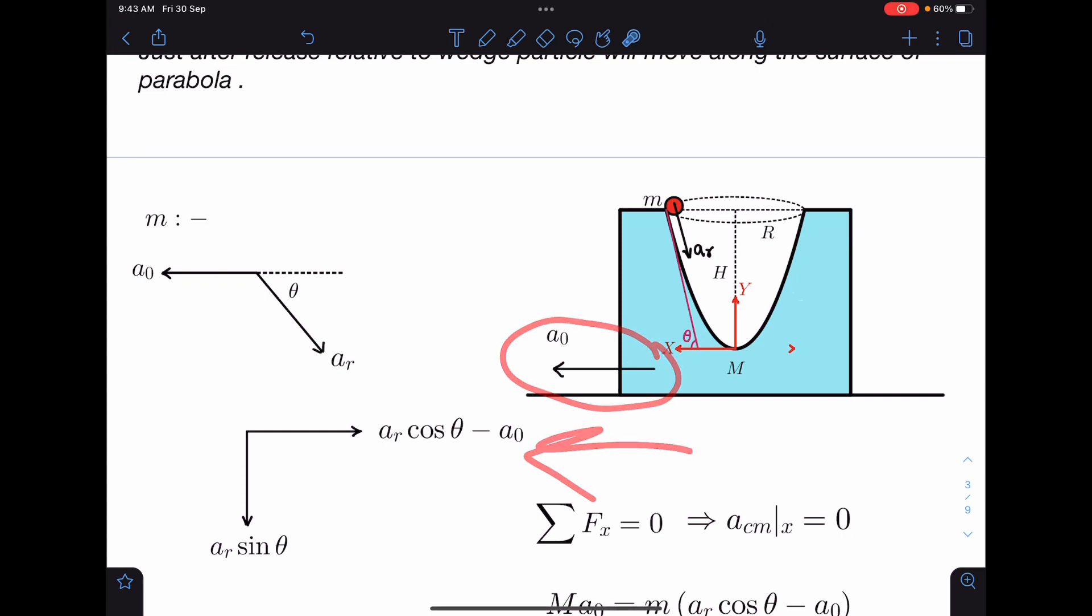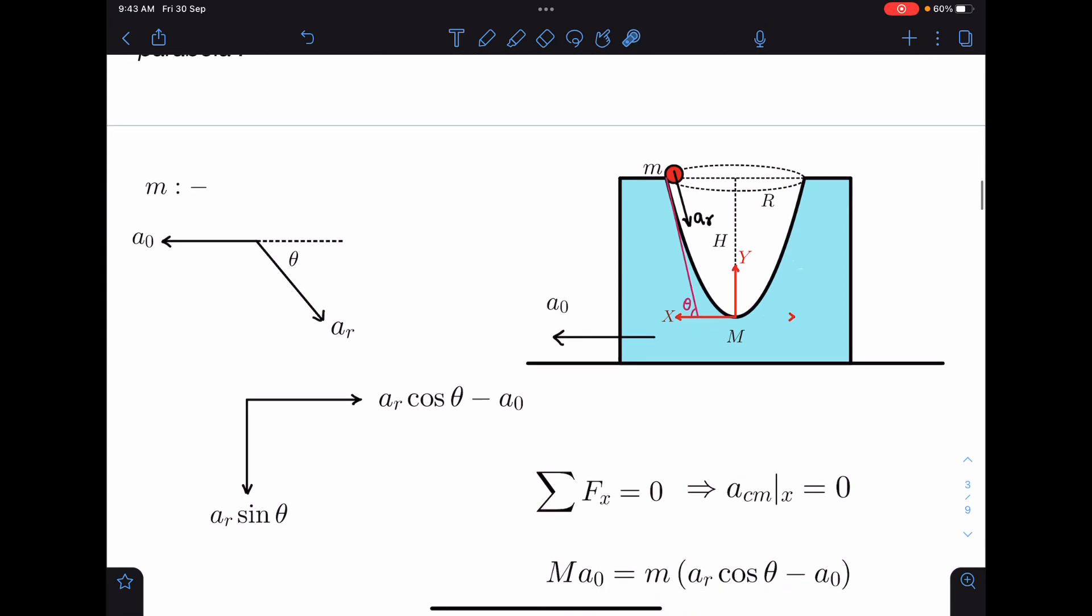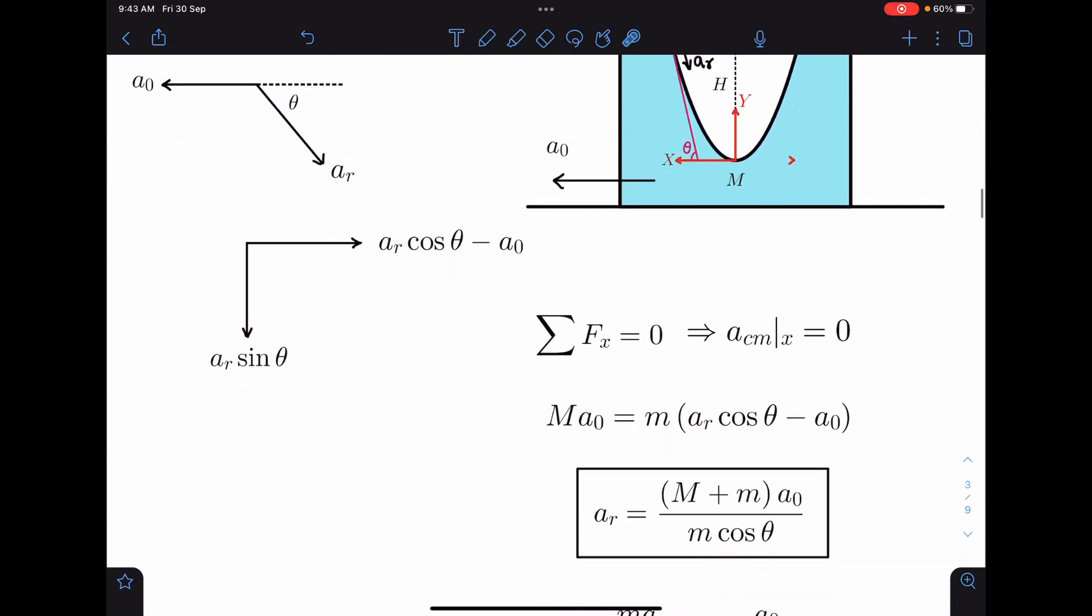If that is the case, then I can say net force is zero means net force on this is Ma₀ to the left, and net force on this in this direction is m times (aᵣcos θ - a₀), and these two should be equal in order to make it zero. This relation comes from momentum conservation.